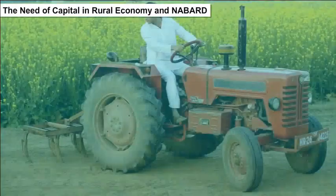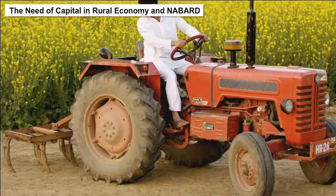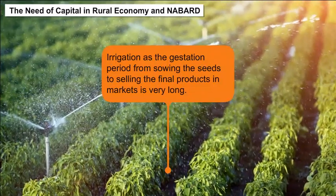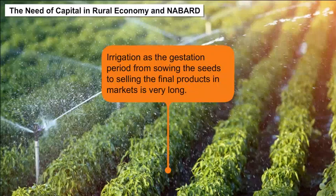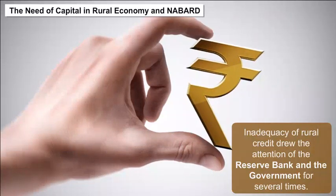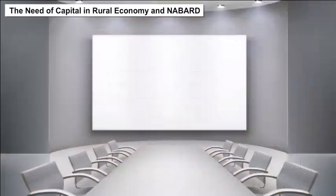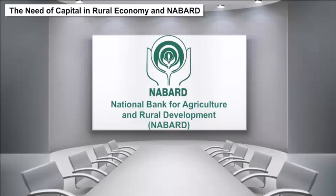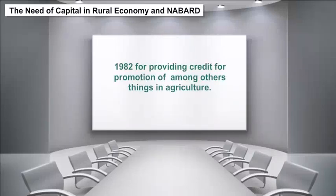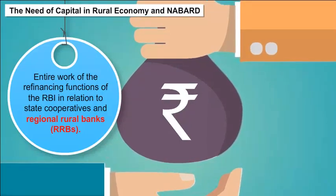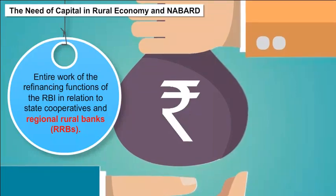In agriculture, farmers used to borrow money for initial expenses like seeds and irrigation, as the gestation period from sowing seeds to selling final products in the market is very long. During the post-independence period, the inadequacy of rural credit drew the attention of the Reserve Bank and the government several times. Following the recommendations of the Committee on Agriculture and Rural Development, the National Bank of Agriculture and Rural Development (NABARD) was set up in 1982 for providing credit for the promotion of agriculture, taking over the entire refinancing functions of the RBI in relation to state cooperatives and regional rural banks (RRBs).